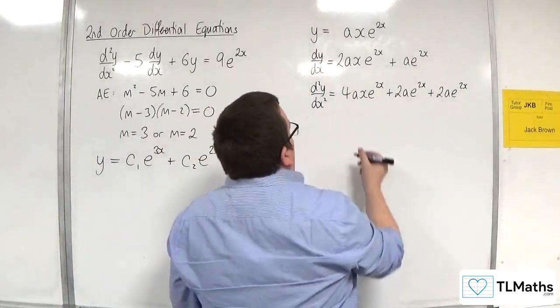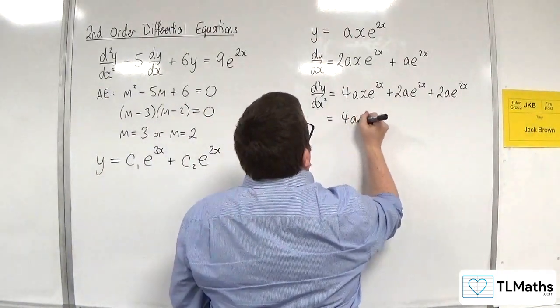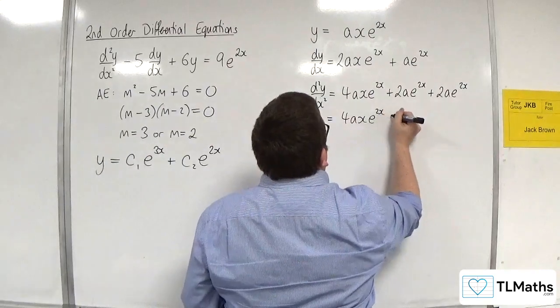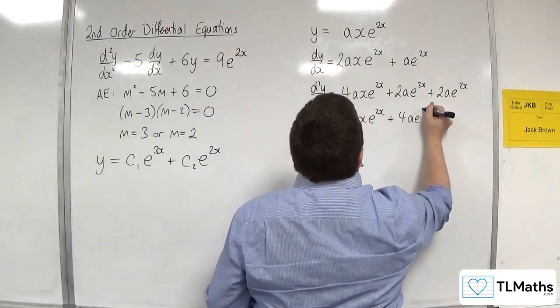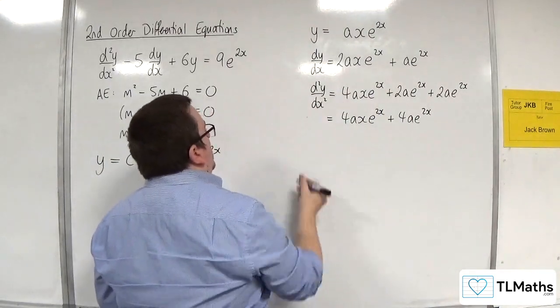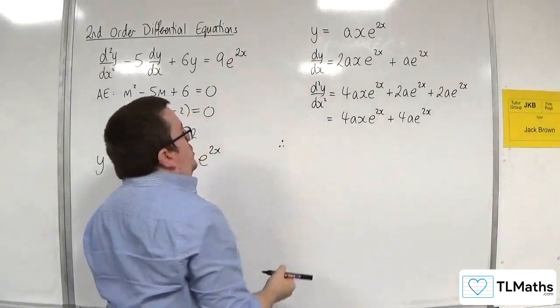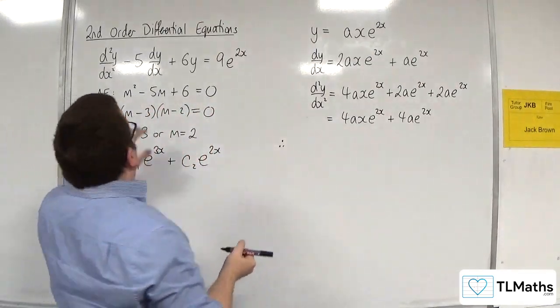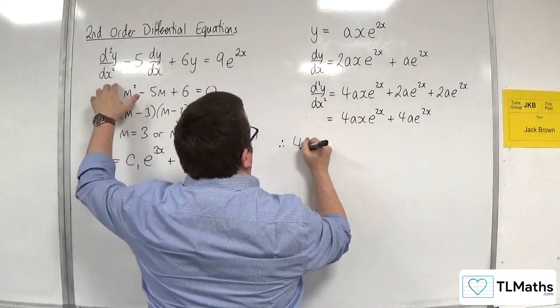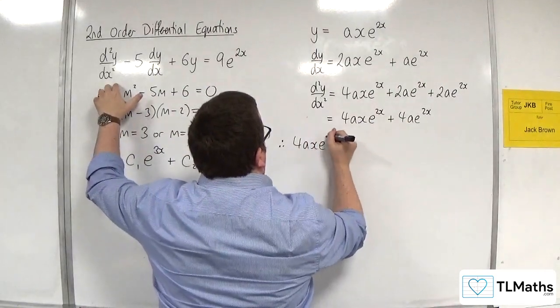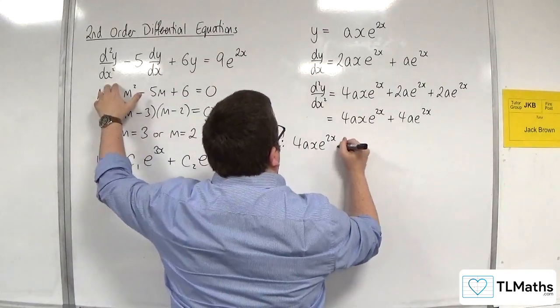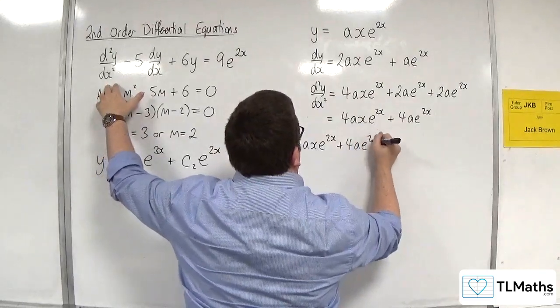And then this differentiates to 2ae to the 2x. So I've got 4axe to the 2x plus 4ae to the 2x.